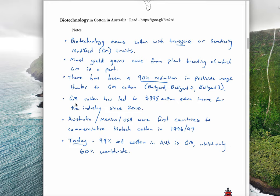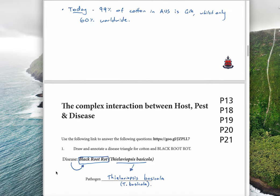The next important point is that GM cotton has led to about $395 million of extra income for the industry since 2010. Australia, Mexico, and the U.S. were the first countries to commercialize the biotechnology of cotton in 1996-1997. Today, 99% of cotton in Australia is genetically modified, whilst only 60% of cotton worldwide is genetically modified. That's an important statistic.